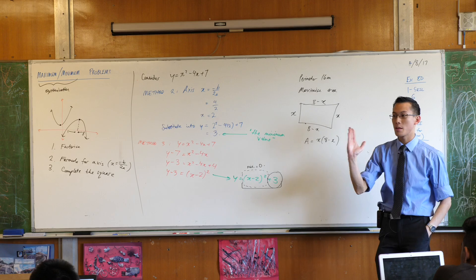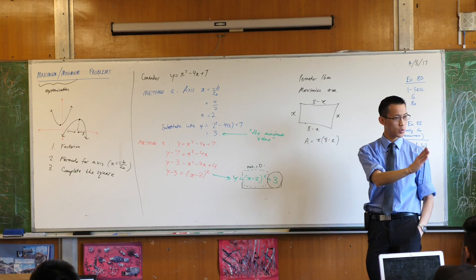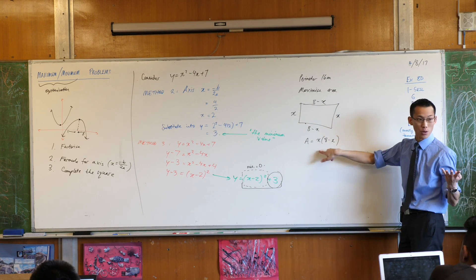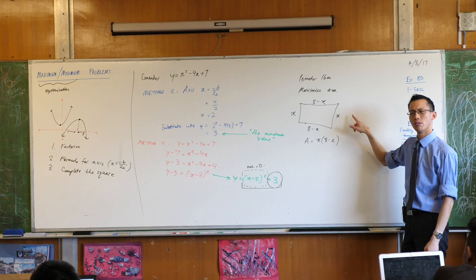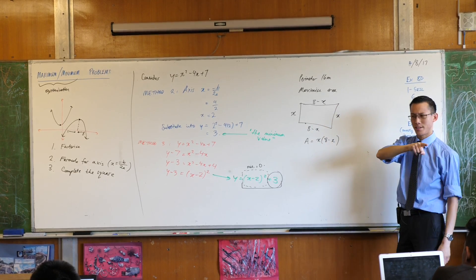There's a root of 0, a root of 8, so now you know where the maximum will occur. It will be at x equals halfway between, which is 4. Which by the way will give you what kind of rectangle? Square. Which is not a coincidence.